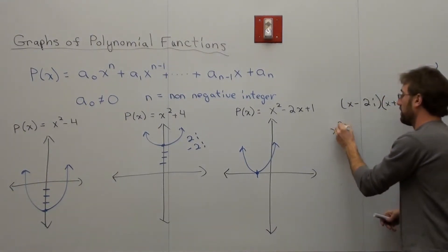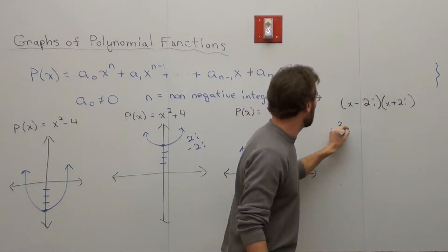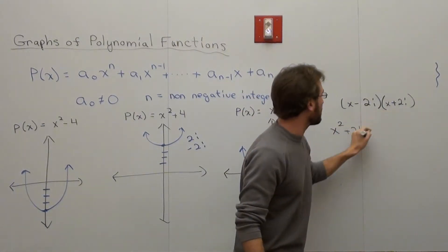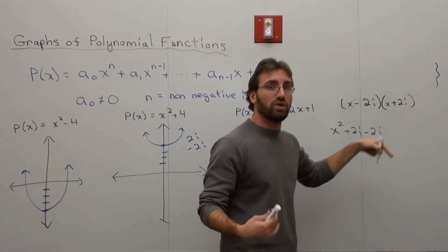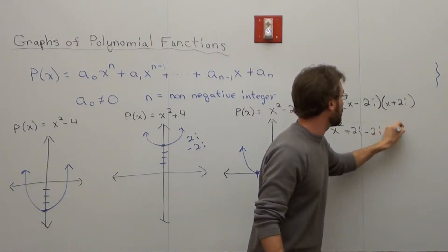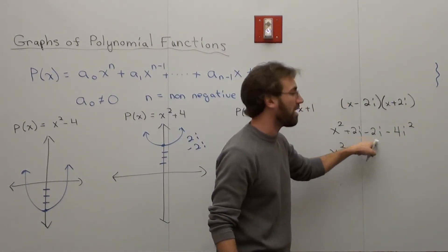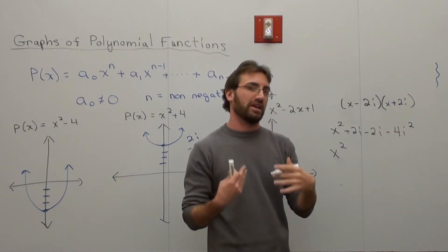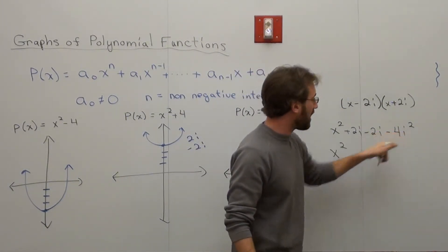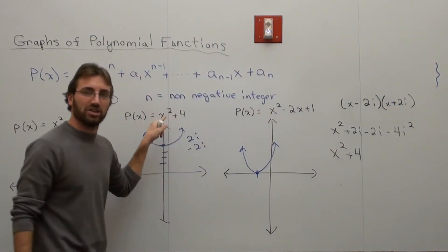x times x is x squared. x times 2i is 2xi. Negative 2i times x is negative 2xi. And negative 2i times 2i is negative 4i squared. That turns out to be x squared. 2xi minus 2xi cancels. i squared is the same thing as negative 1. It's negative 4 times negative 1, which is plus 4. So it, in fact, does work.